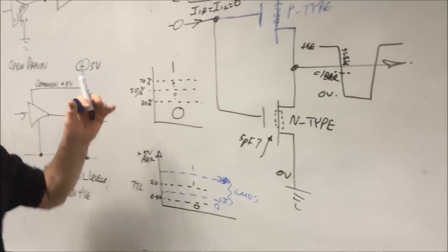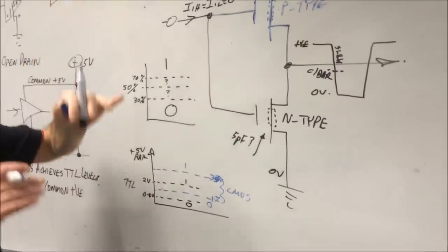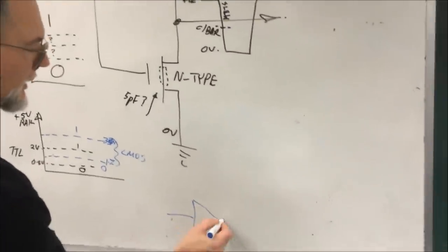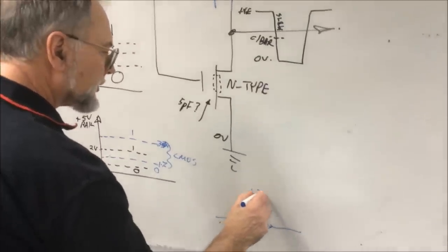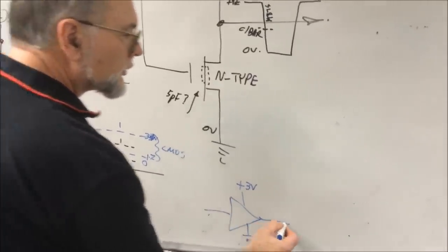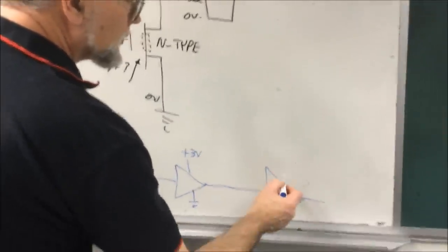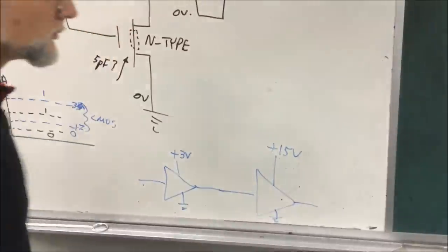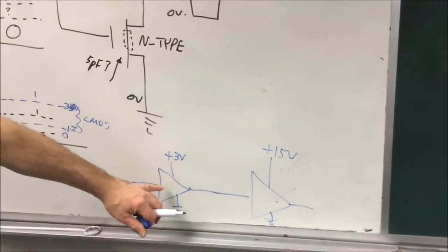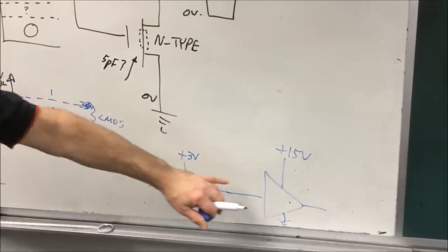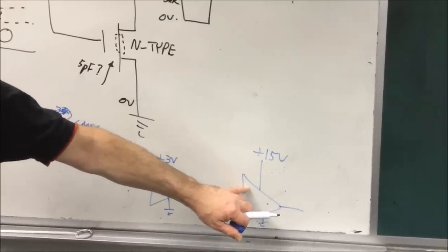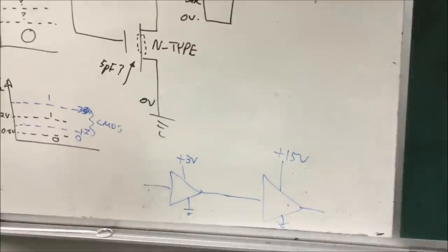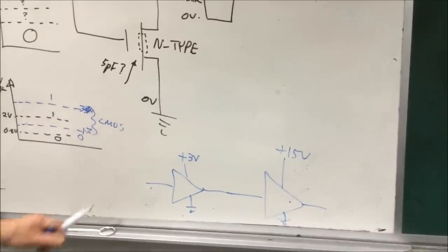But unlike TTL, CMOS can take rails that are much higher and much lower. So you can have a CMOS part here operating at plus 3 volt trying to drive another one here which is operating at plus 15 volt. And logic levels for this would be 1 and 2 volt, logic levels for that would be 6 and 11 volts or 6 and 9 volts. Got problems, they don't agree with voltage levels if they've got different power supply rails.